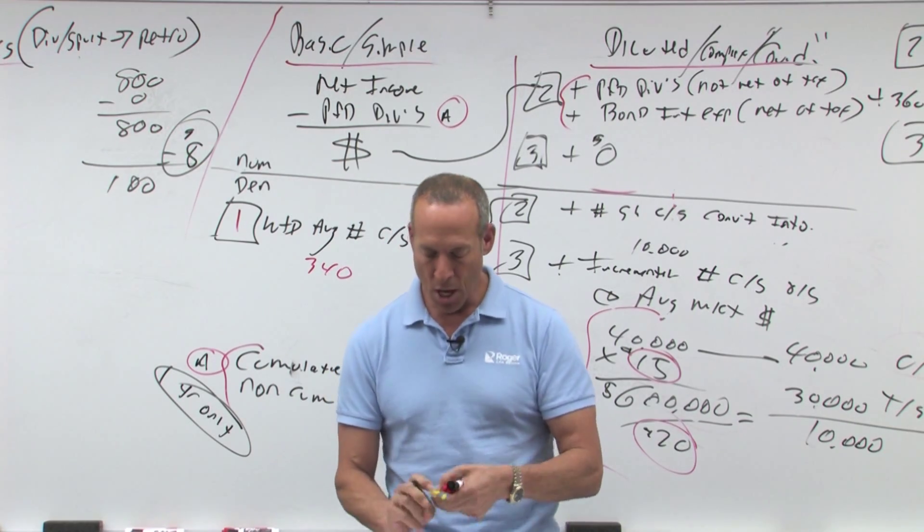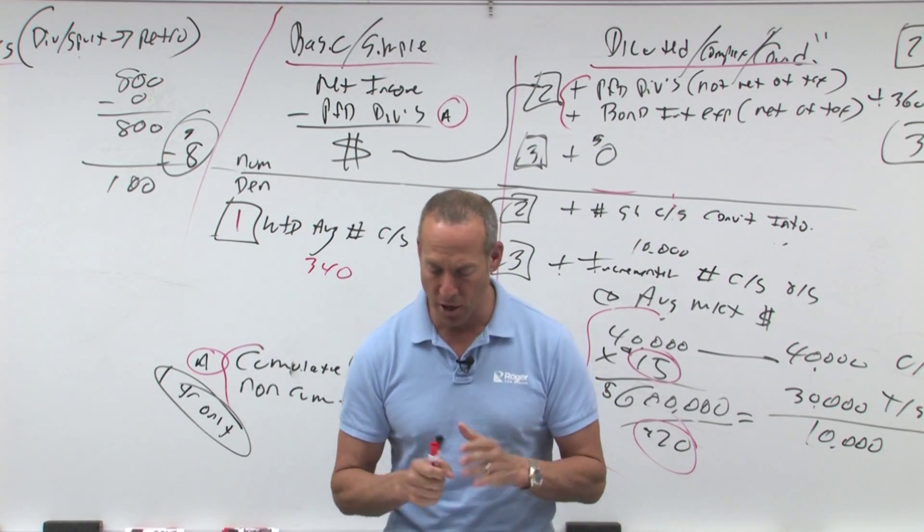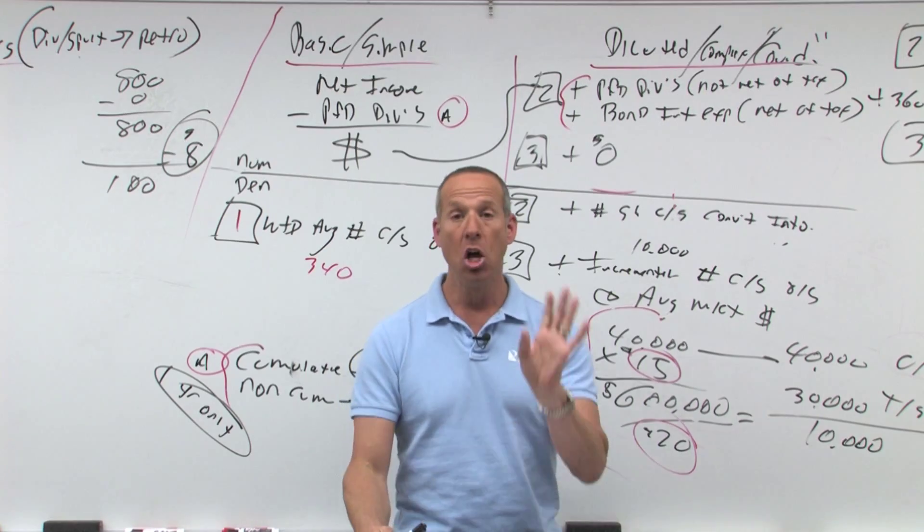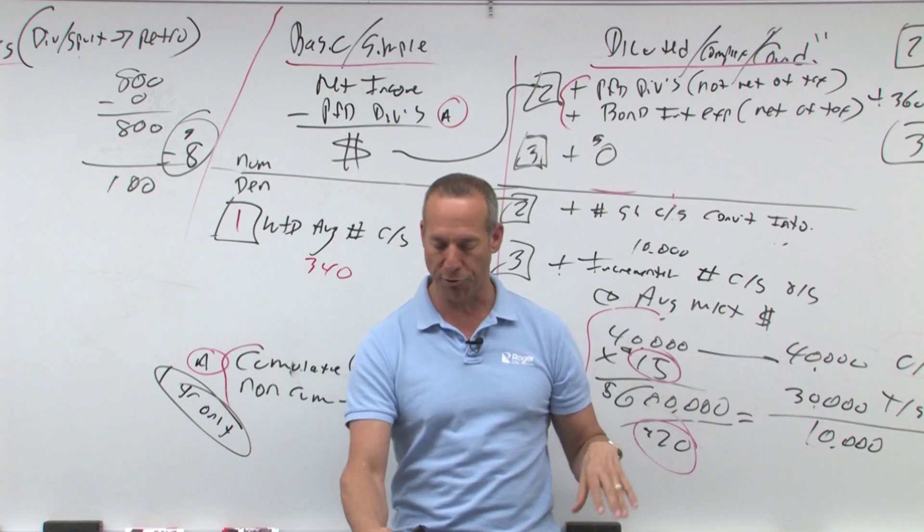Let's see what we got. Strachko has one class of common stock outstanding and no other securities that are potentially convertible into common stock. So they have nothing convertible. That means no options, rights, warrants, no convertible bonds, convertible preferred.